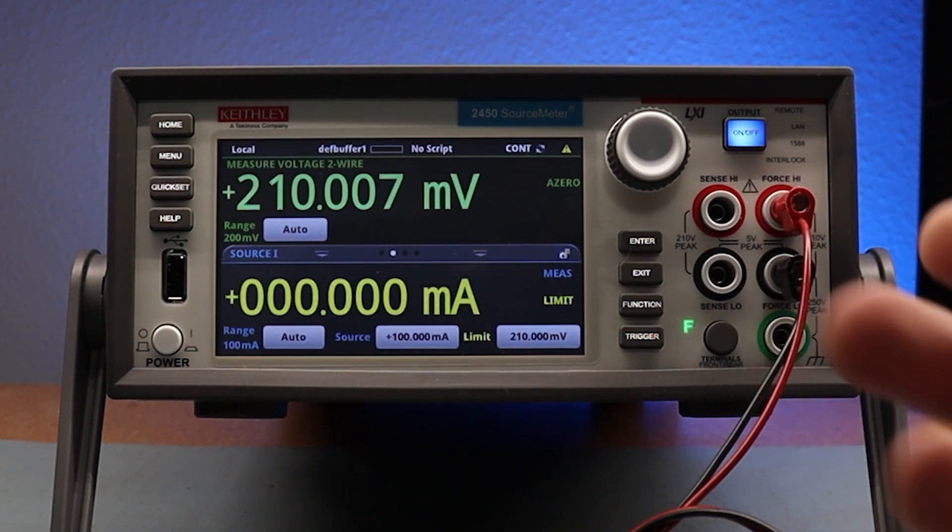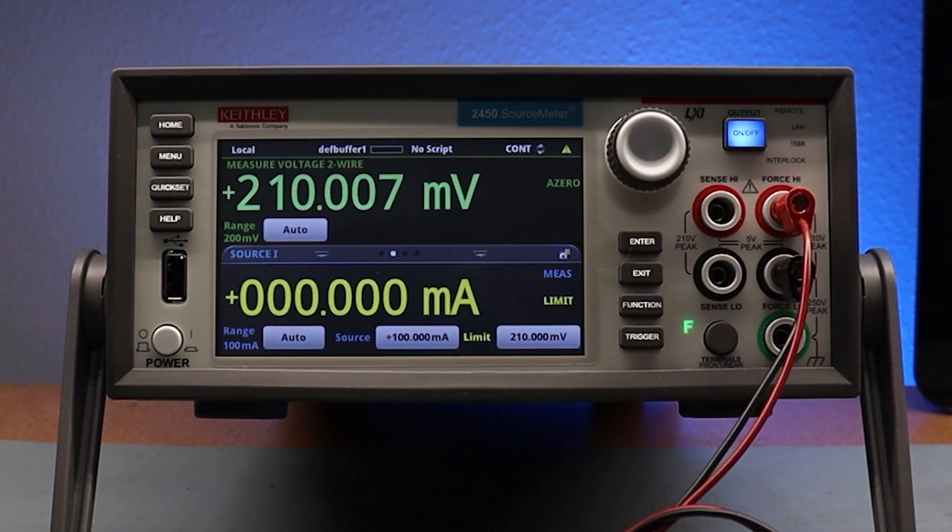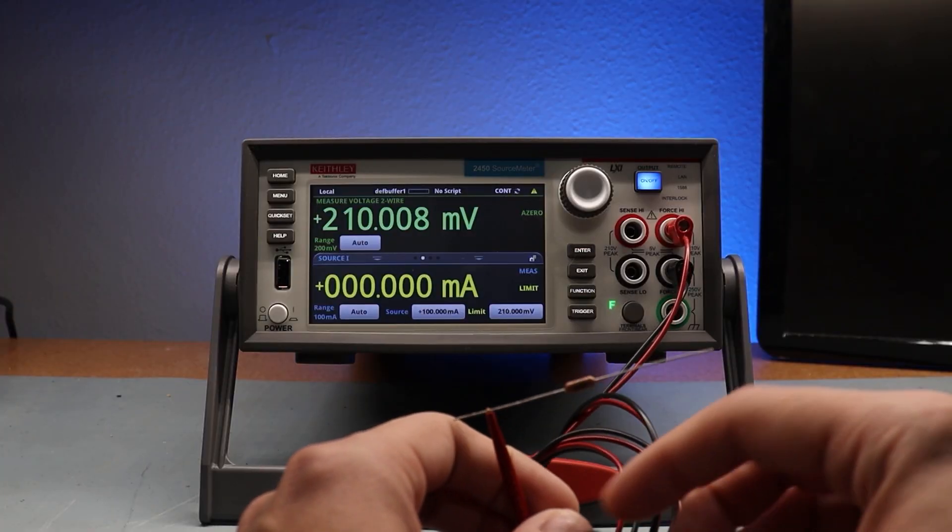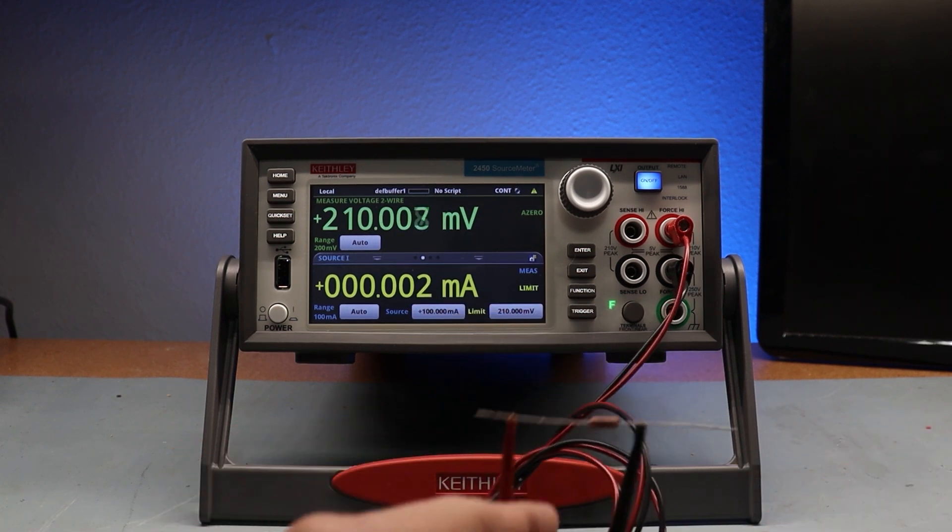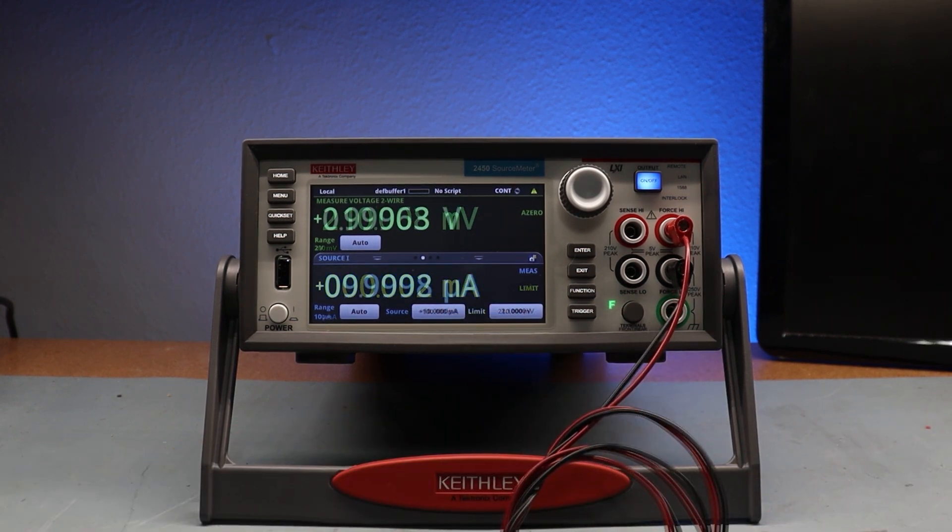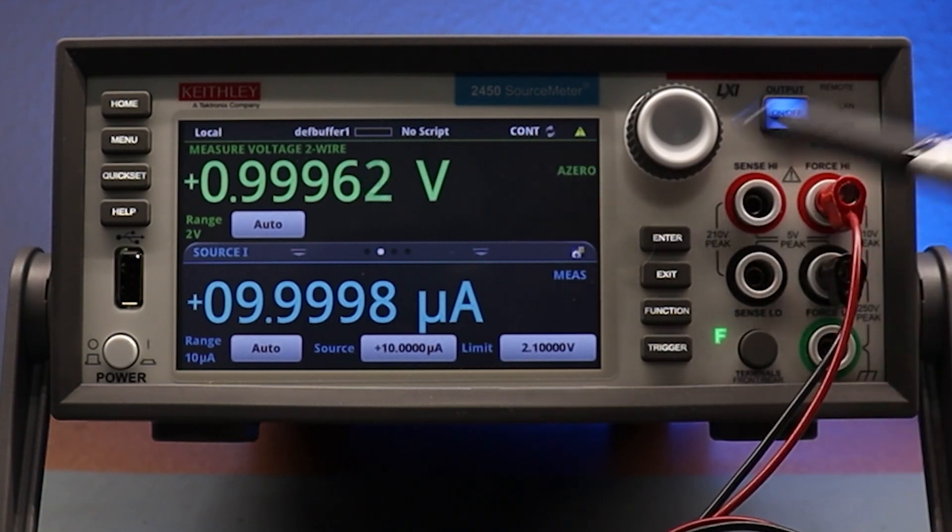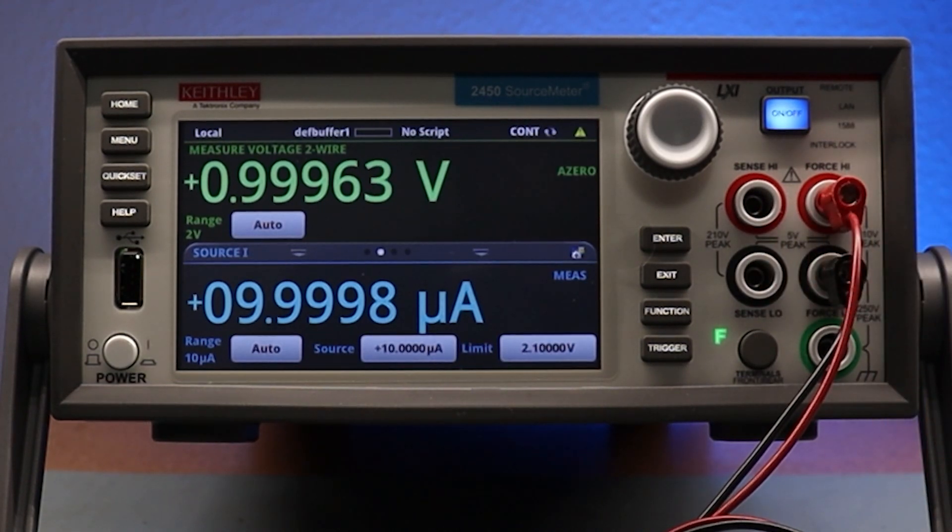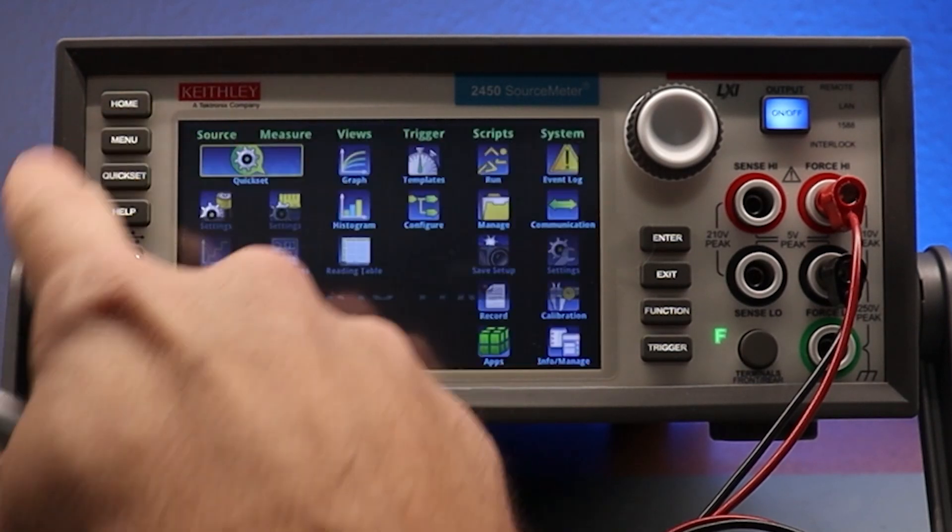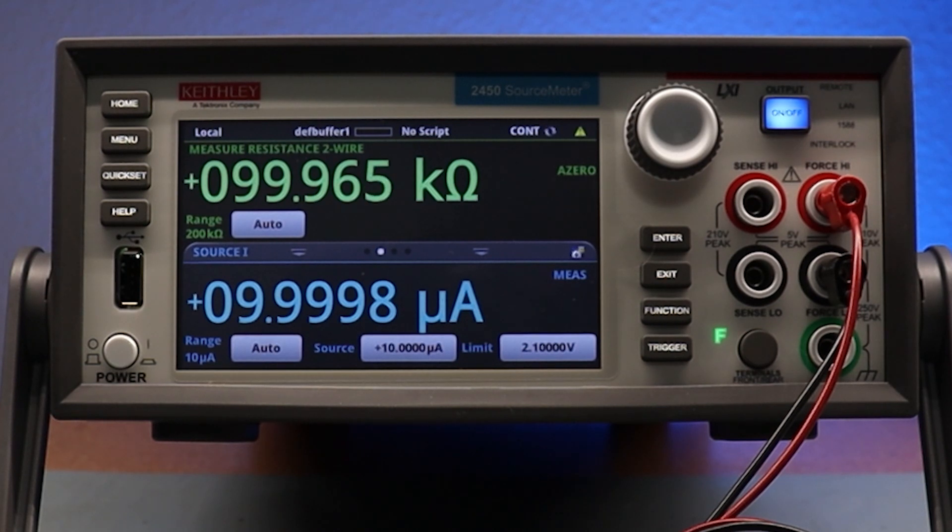Now the cool thing about this instrument is that it shows you how much current you're forcing and how much voltage it's reading across the resistor under test. So let's attach our unknown resistor. Now that that's attached, let's see what we get. So we're sourcing about 10 microamps of current and reading just under one volt across the resistor. So using Ohm's law we divide the voltage by the current and that comes out to just under a hundred thousand ohms.